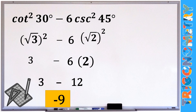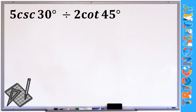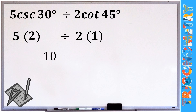Last example: 5 cosecant 30° divided by 2 cotangent 45°. Cosecant 30° = 2 and cotangent 45° = 1. So we have (5×2) / (2×1) = 10/2 = 5. That's how we evaluate trigonometric ratios of special angles. I hope you were able to understand our lesson for this week. Thank you and God bless everyone.